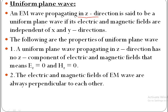...independent of x and y directions. That means if the wave is propagating in the z direction, its electric and magnetic fields are independent of x and y directions — that means electric and magnetic fields are uniform along x and y directions. That is the definition of uniform plane wave.